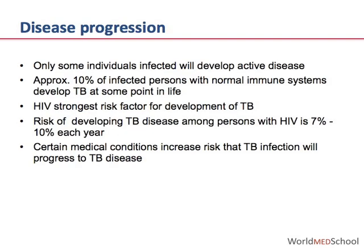Not all individuals infected with Mycobacterium tuberculosis will develop active TB disease. Approximately 10% of infected persons with a normal immune system develop TB at some point in their lifetime. The greatest risk for the development of active disease is within the first one to two years following infection. HIV co-infection is one of the strongest risk factors, and HIV-infected individuals carry an annual risk of between 7 and 10% for the development of active disease. In 2011, WHO estimated approximately 1.1 million new cases of TB among persons living with HIV, resulting in roughly 430,000 deaths.